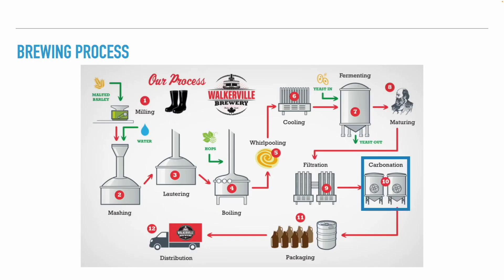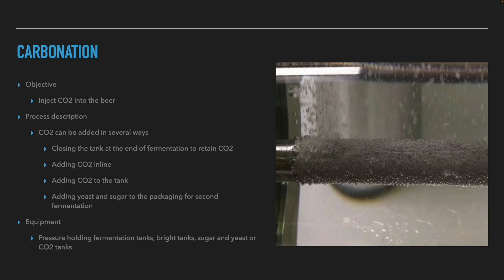After the beer is filtered, the next step is carbonation. The objective is to inject CO2 into the beer. This can be done in several ways: the brewer can close the fermentation tank near the end of fermentation to retain CO2, add CO2 in-line during transfers, add CO2 directly to the tank, or add yeast and sugar to the package for a second fermentation. The equipment needed is pressure-holding fermentation tanks or bright tanks, and sugar and yeast or CO2 tanks.